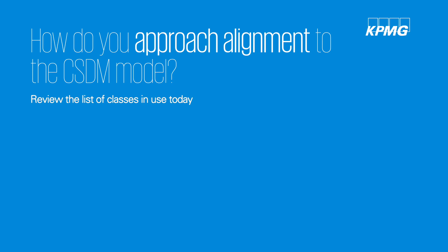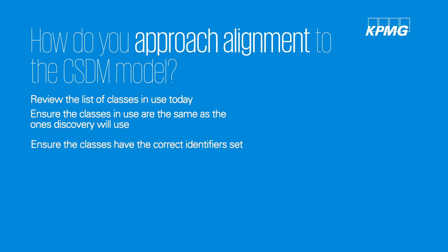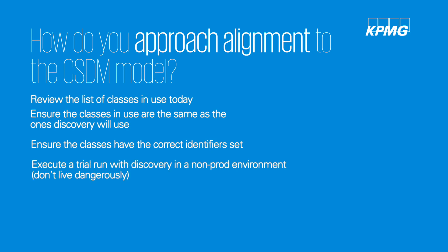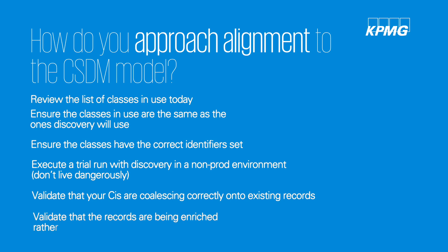Discovery is going to use a certain set of classes, so we want to make sure the classes in the CMDB today match what Discovery will use. We also want to make sure those classes have the correct identifiers set — things like serial number, which is a key way of identifying unique server records. We want to make sure server records have their serial numbers populated, and do a trial run with Discovery in a non-production environment, discovering a few hundred servers and validating that they coalesce correctly onto existing records rather than creating new ones.